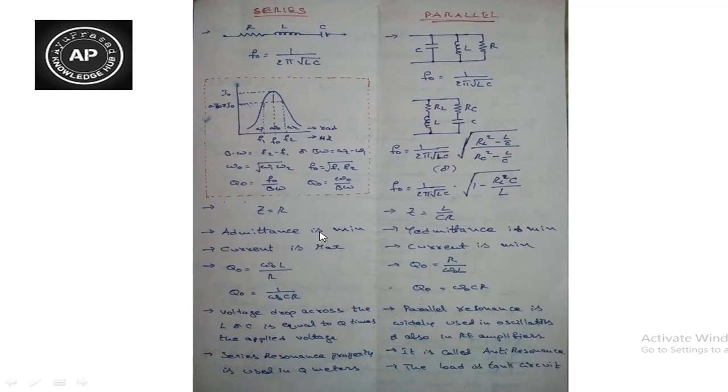For parallel resonance, at resonance the impedance Z is equal to L over CR. In parallel circuits, impedance is maximum, so current is minimum.